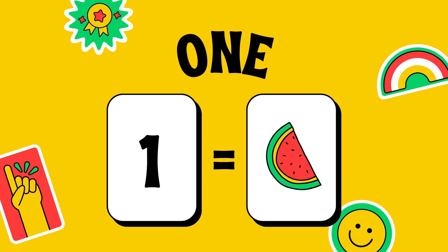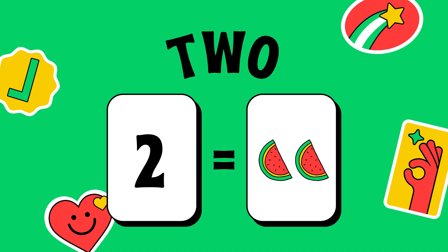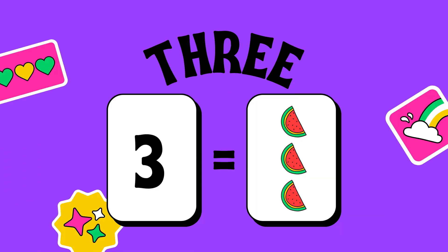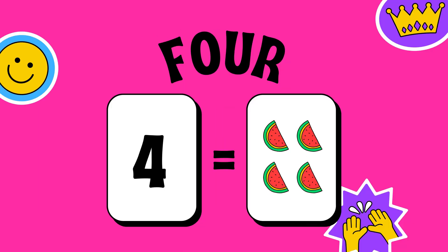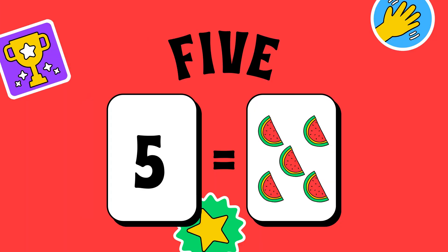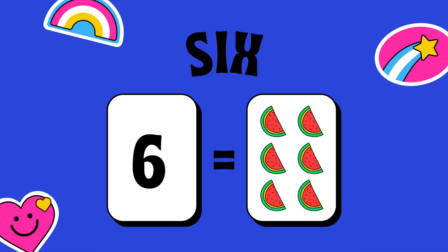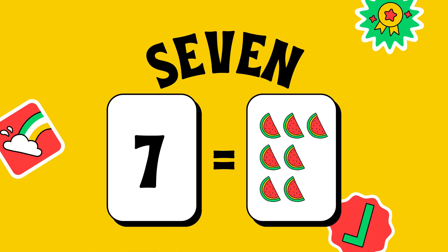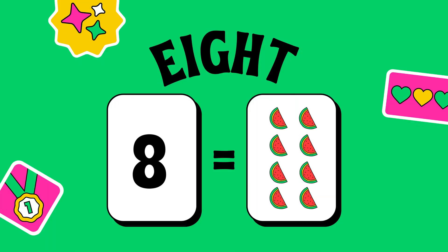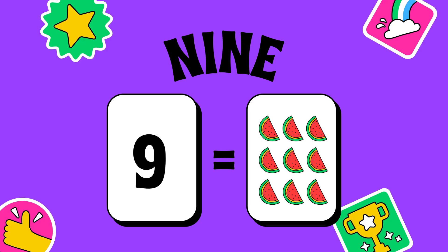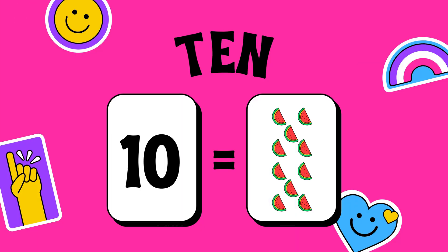This given number is 1. Next given number is 2. The next given number is 3. The next number is 4. The next number is 5. The next number is 6. The next number is 7. The next number is 8. The next number is 9. The next number is 10.